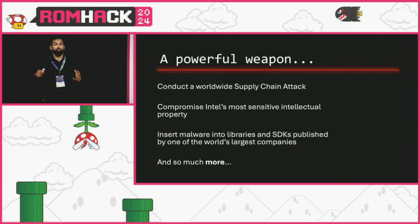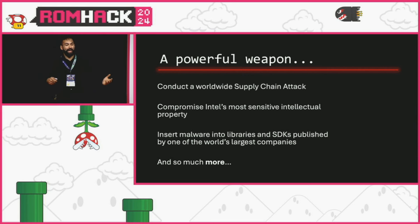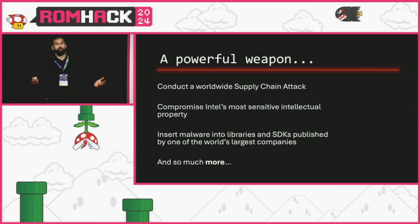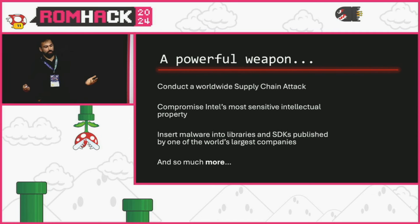This is a really powerful technique. Someone with malicious motivations could use this to conduct a worldwide attack. At Black Hat, I talked about how someone could have used a GitHub Actions vulnerability to steal Intel's CPU designs from the internet — no prerequisites. Today I'm going to talk about how you could have backdoored software published by one of the world's largest companies.